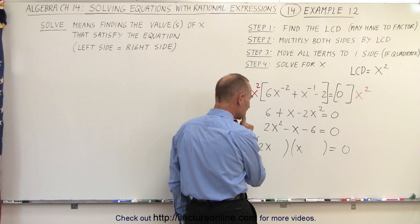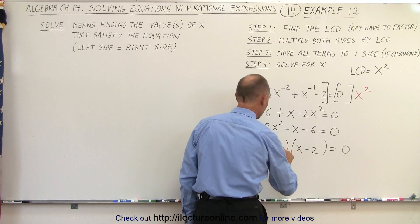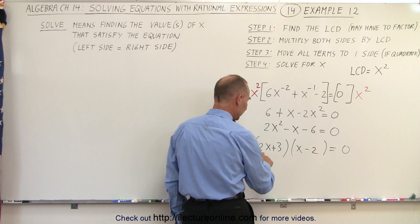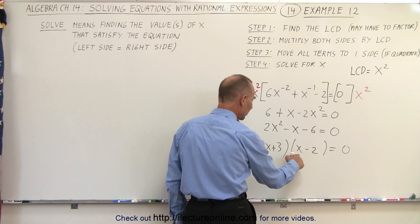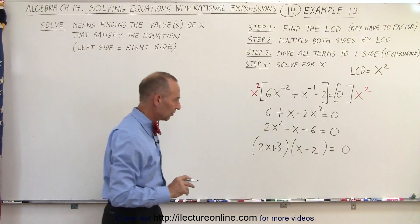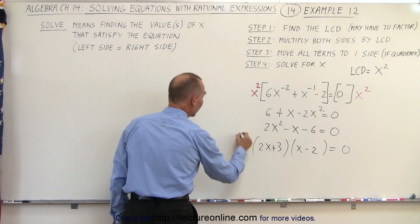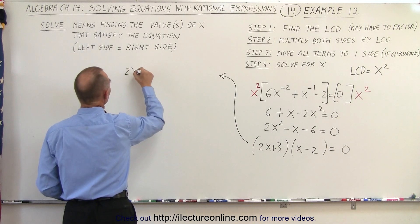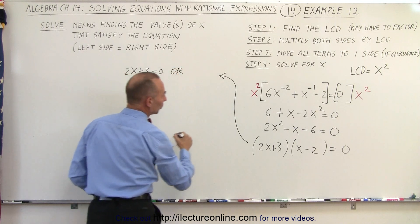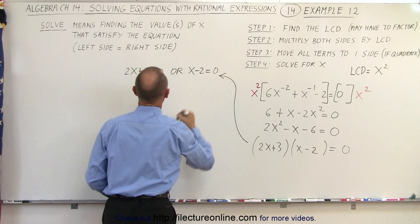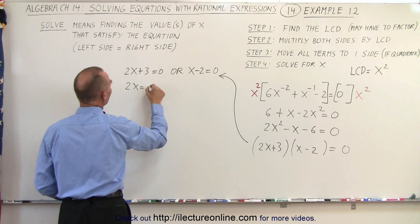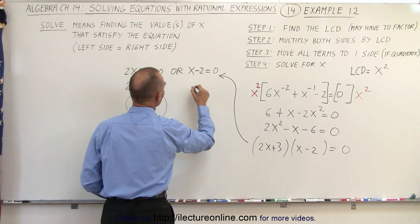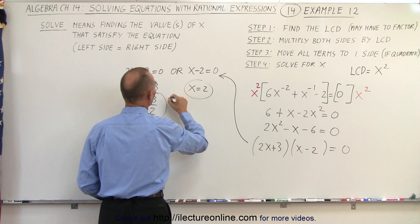So let's see here. Minus 2 and plus 3, because plus 3 minus 2 gives me minus 6. Negative 2 times a positive 2x is a minus 4x, plus a 3x gives you a minus x. So that is the proper way to factor that. Now, what that means is that we have two binomials multiplied together giving me 0. That means either the first binomial, 2x plus 3, equals 0, or the second binomial, x minus 2, is equal to 0, which means that 2x equals negative 3, or x equals negative 3 over 2 as one possible solution, and x equals 2 as the other possible solution.